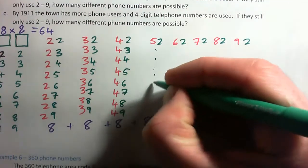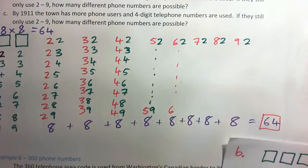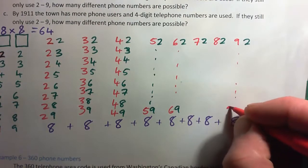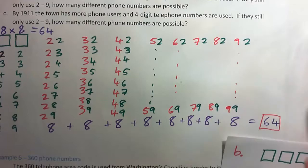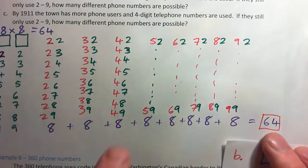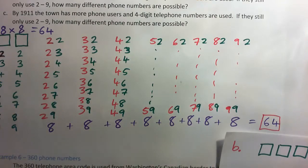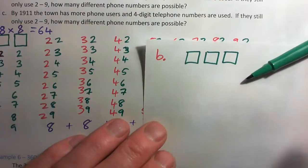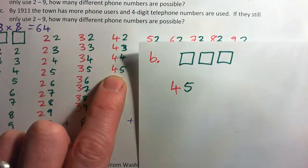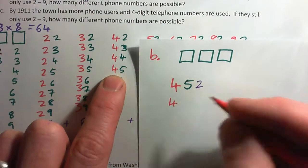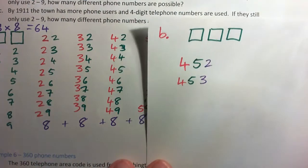Those 2-digit numbers went all the way from 2-2 down through 9-9. But if you add on a third digit to a phone number, what I want you to understand is you can take any one of those — like the phone number 4-5 — and you can add on another digit like 2, making 4-5-2. But you can also go 4-5-3, and that's another one. So for any of these 2-digit phone numbers, there are actually 8 new ones you can create.